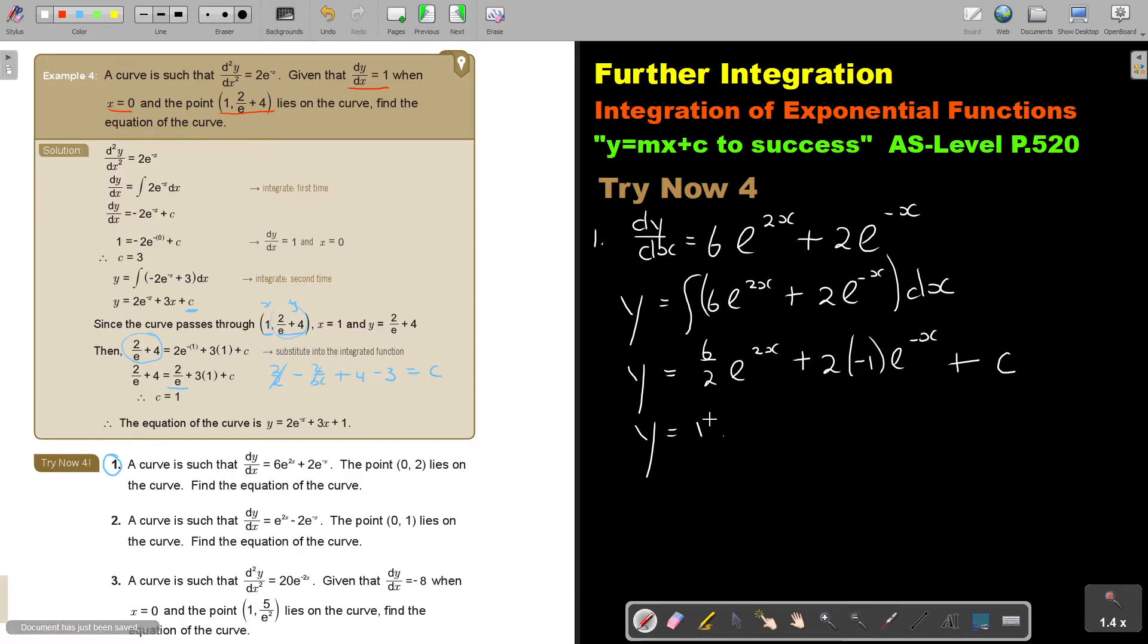So if I simplify this further, it's 3e^(2x) minus 2. I can leave it like this first, or otherwise, to substitute, it's better if it's on top, and I take it to the bottom, plus c.